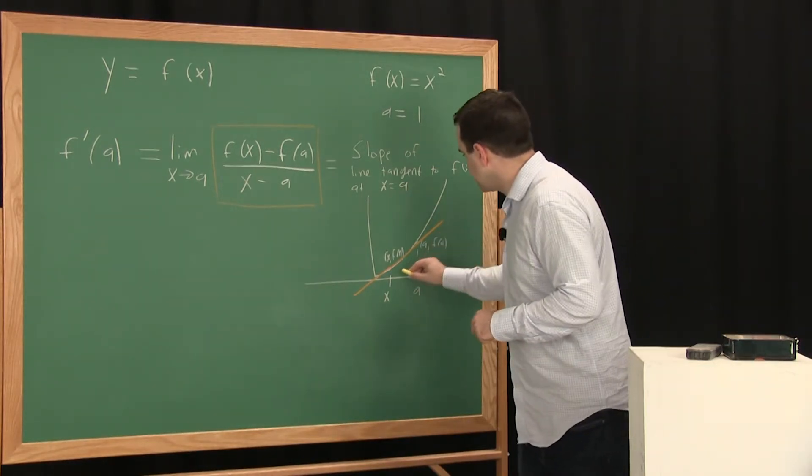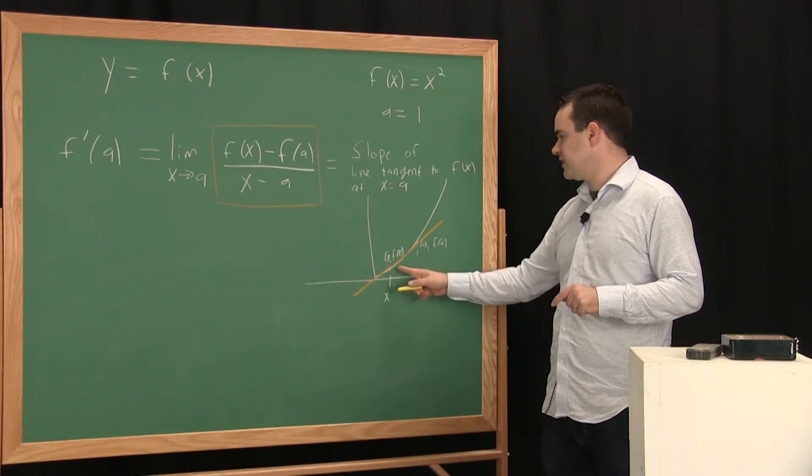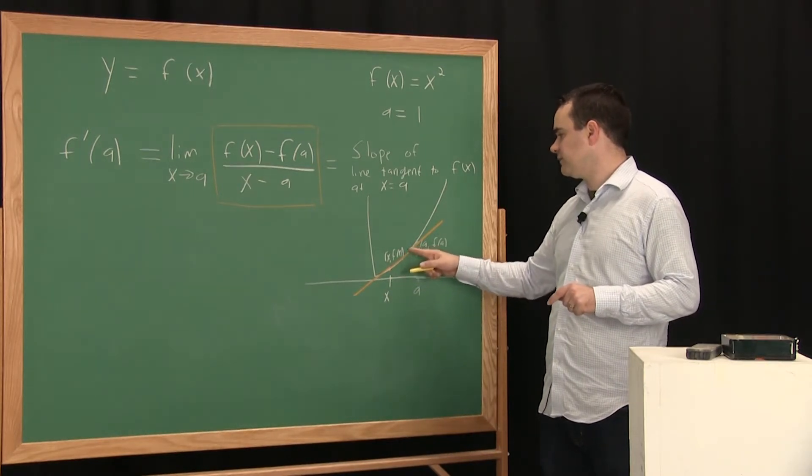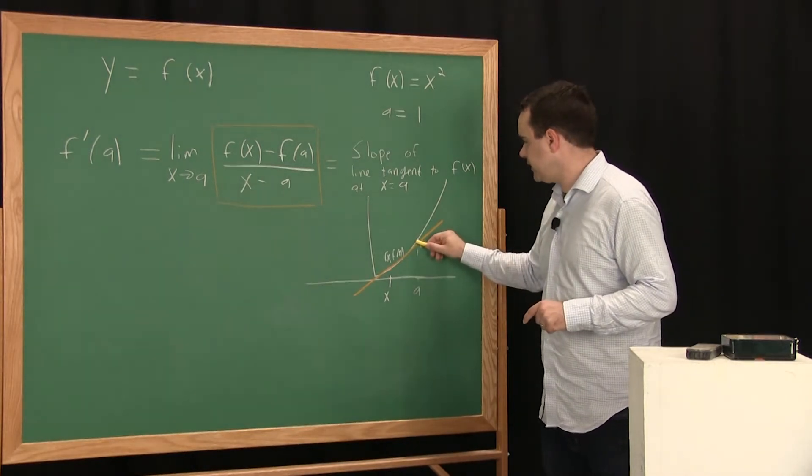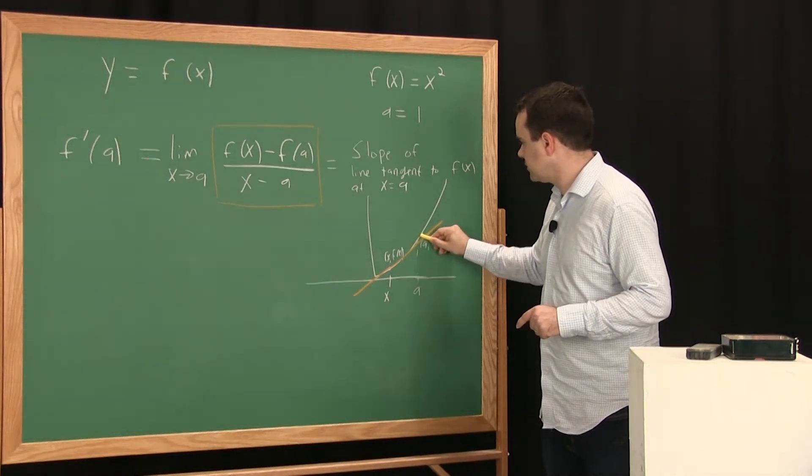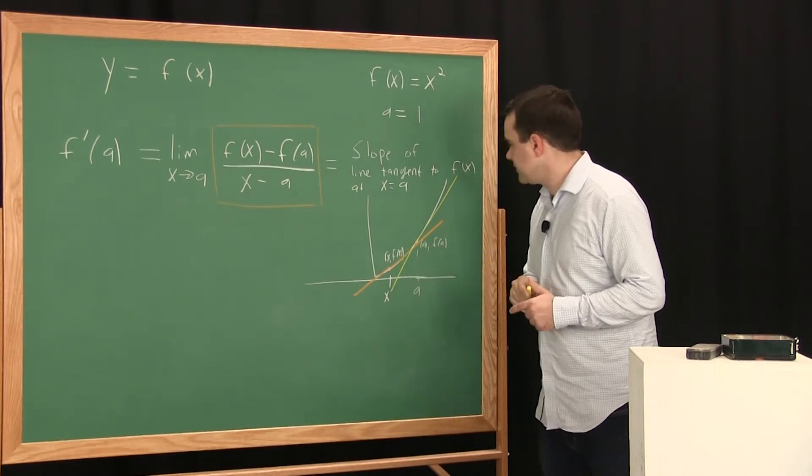And this is probably going to look, you can imagine to yourself as x slides closer and closer to a, these secant lines are going to get closer and closer up here, and you finally end up with the tangent line looking something like that.